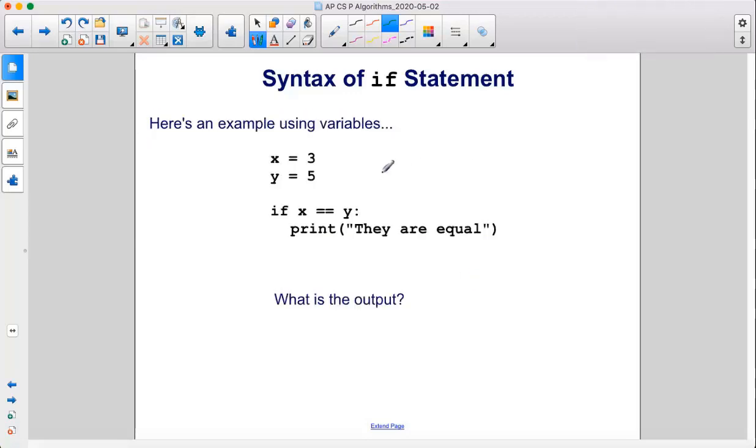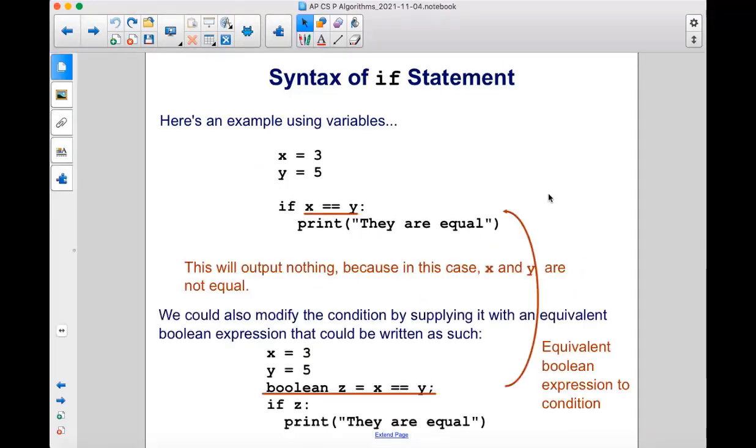Here's an example using variables. x equals 3, y equals 5. If x is equal to y, print they are equal. What is the output? This will output nothing because in this case, x and y are not equal.